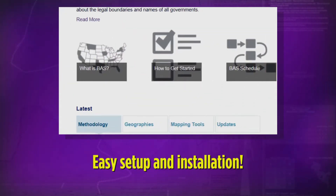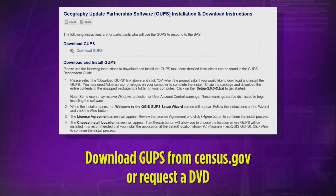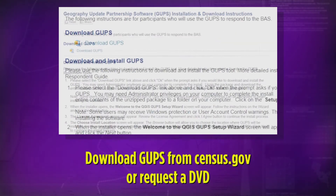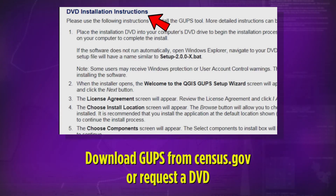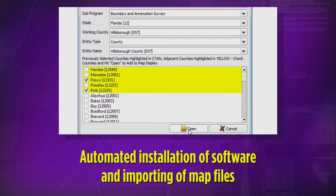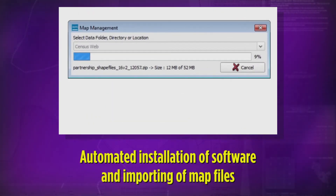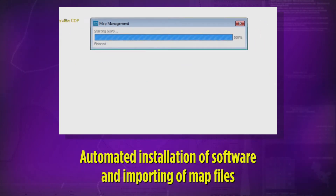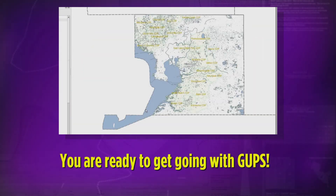Installation and setup of GUPS is easy. Program participants can download GUPS for multiple programs from census.gov or request copies on DVD. Installation of GUPS, including importing your local area map files, is automated. You are ready to get going with GUPS.